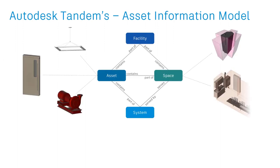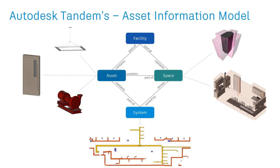An asset in the dictionary is defined as a useful or valuable thing, person, or quality. In AEC, an asset can be an object such as a door, lighting fixture, or pump, but also includes spaces such as rooms and clearance zones around equipment. Assets are part of systems that serve spaces in the facility, and Autodesk Tandem is designed to infer and leverage these relationships. Tandem's digital handover workflow enables customers using BIM to deliver a descriptive twin of the facility with a well-defined asset information model. Within that information model, each asset is classified and tagged with additional data according to the owner's requirements, which includes links to the necessary documentation for that asset.